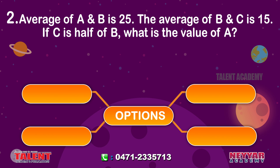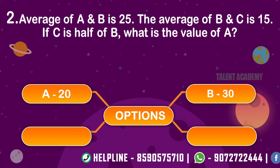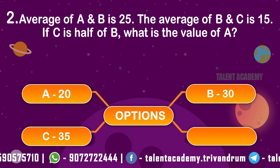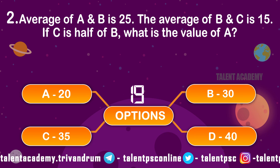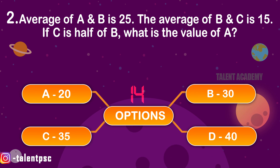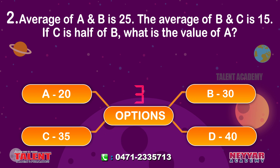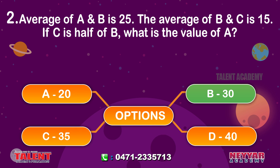The average of A and B is 25. The average of B and C is 15. If C is half of B, what is the value of A? Options: A 20, B 30, C 35, D 40. The correct answer is B 30.